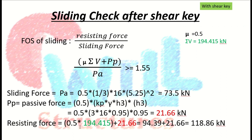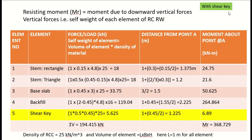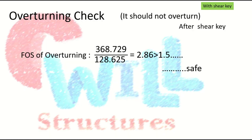For the revised calculation of resisting force: 0.5 × ΣV (updated) + Pp (updated) = 118.6 kN. The sliding force remains unchanged at 73.5 kN. The factor of safety against sliding with the shear key is now 118.6 / 73.5, which is greater than 1.5, so it is safe. The resisting moment is also recalculated with the new values and equals 368.729 kN·m, which also satisfies the overturning check.